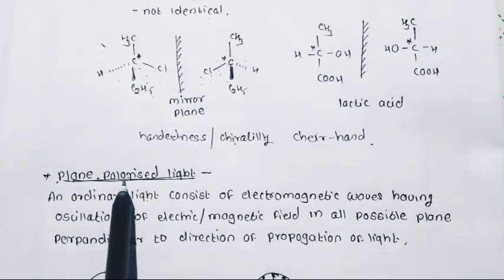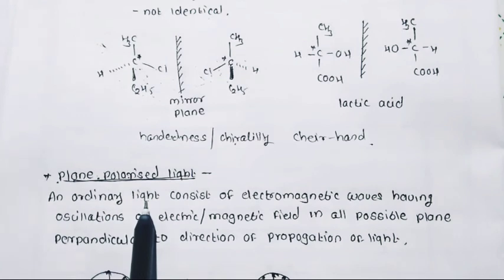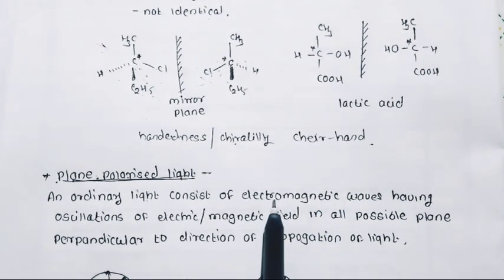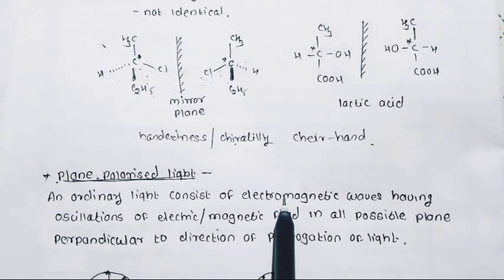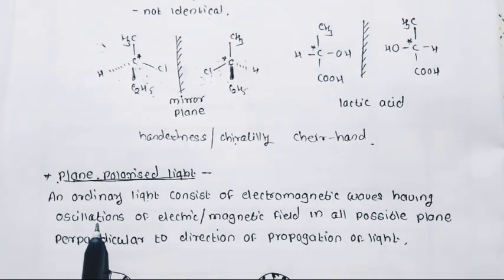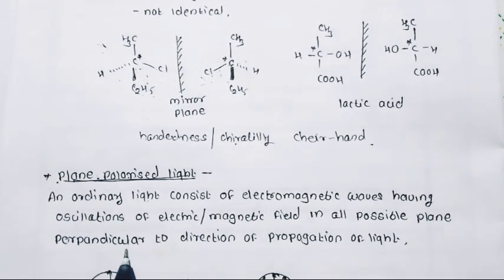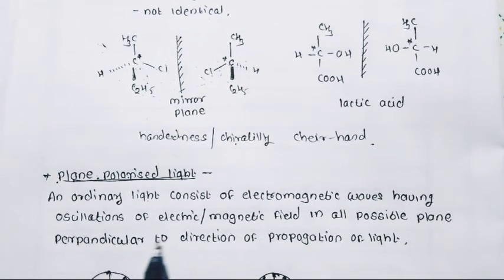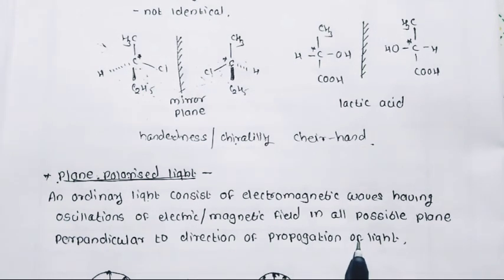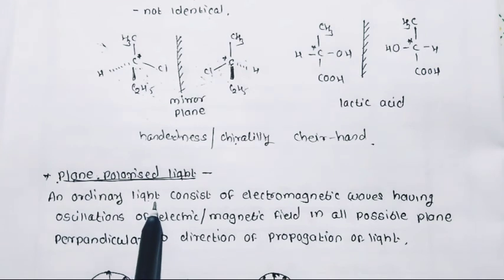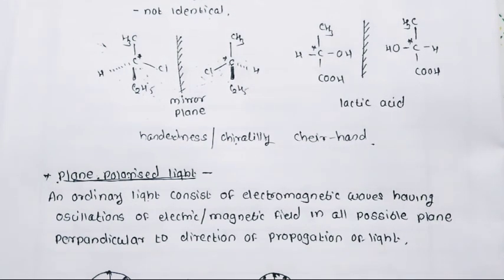Next point: plane polarized light. Ordinary light consists of electromagnetic waves — different types of waves such as IR, UV, microwave — having oscillations, meaning vibrations of an electric or magnetic field in all possible planes which are perpendicular to the direction of propagation of light. So ordinary light vibrates in all possible directions perpendicular to its direction of propagation.